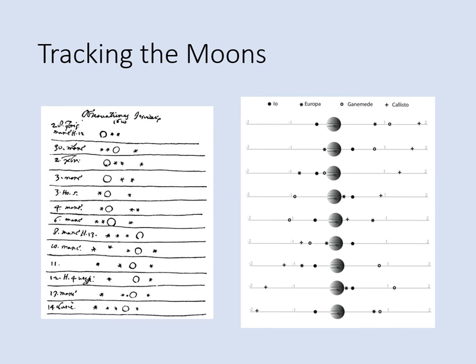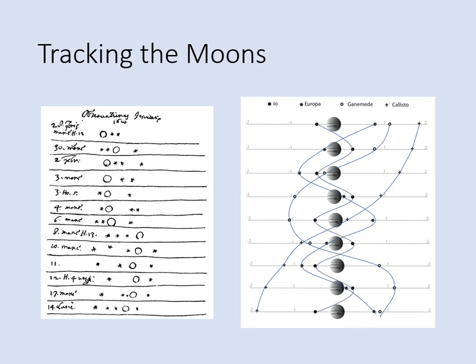Now, since we know which moon is which, we can start connecting the dots for each moon. Let's start with Callisto, the outermost moon and the one that moves the slowest — in the time shown here, it looks like Callisto makes about one half of an orbit around Jupiter. Next we'll add Ganymede, which orbits a little faster and closer to Jupiter. After that we'll do Europa, and finally Io. Io orbits fast enough that we might not be getting quite enough points to really see the shape of its orbit well. But look what we've got: a diagram showing the motions of the moons around Jupiter over the course of a little more than a week. This is an example of a Jupiter Moon Tracker diagram.